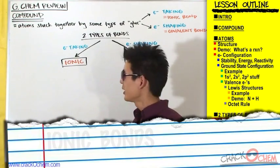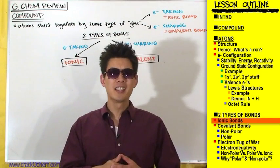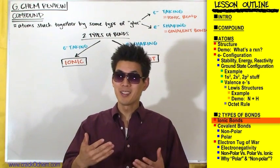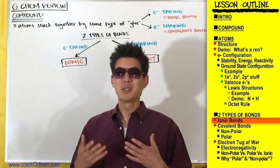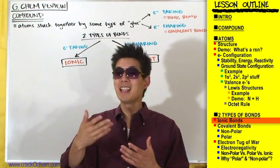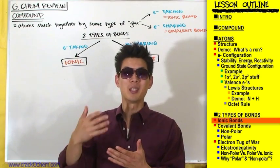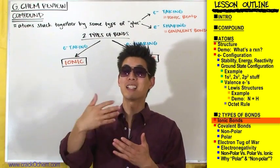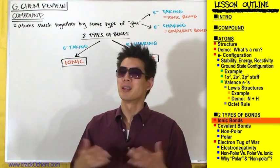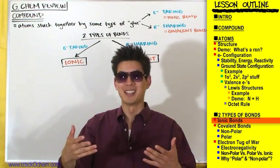Let's start off by talking about ionic bonds. Can any of you think of an example of an ionic bond or an ionic compound? One of the first things we all learn in chemistry is that table salt, NaCl, sodium chloride, is an example of an ionic bond, an ionic compound. We might not know why it's ionic, but we know that's what salt is.